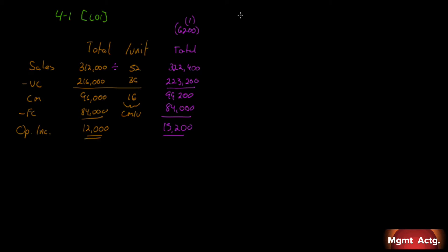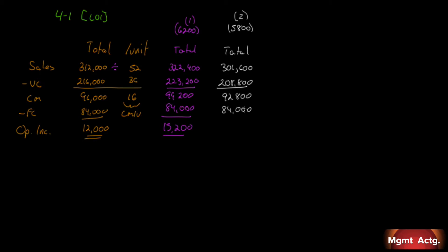Scenario two: the sales volume declines by 200 units. We already know we have 6,000 units, so now we're working with 5,800 units. 5,800 times $52, times $36, and so on — get your calculator out. You'll get sales of $301,600, variable costs of $208,800, leaving a contribution margin of $92,800.